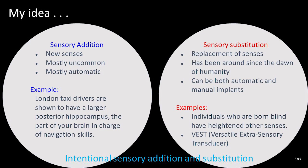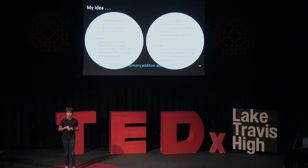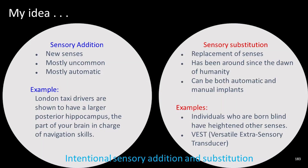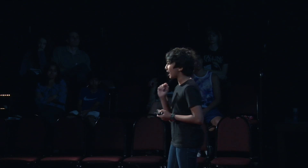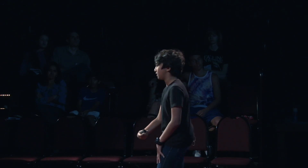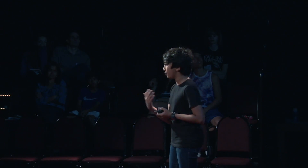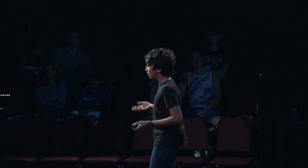So let's look at my idea. Sensory addition and sensory substitution are two ways that neuroplasticity works in real life. Sensory addition usually involves new and uncommon senses, and they're mostly automatic. For example, London taxi drivers are proven to have a larger hippocampus — the part of your brain which deals with navigation skills. This makes sense, because London taxi drivers have to work their way around the city of London.